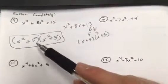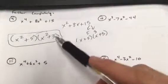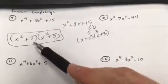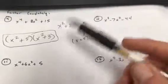If you were to foil this, 5x squared, 3x squared gives you 8x squared. 5 times 3 gives you 15. So we're done.